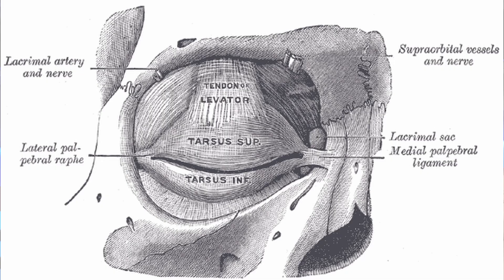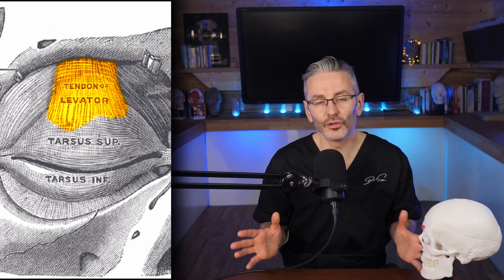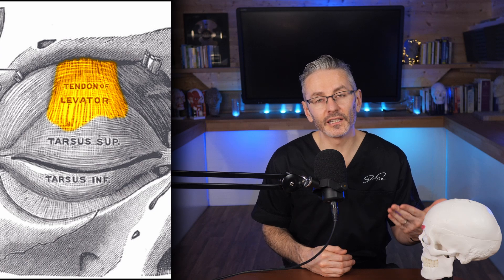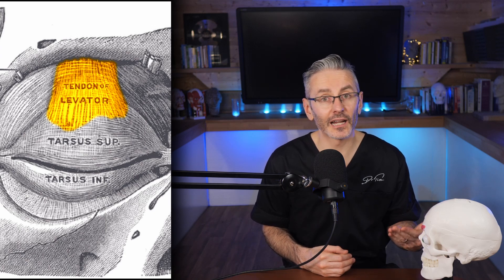First, let's understand what causes a ptosis. There are two muscles that control your upper eyelid: you have your tarsal muscle, which is a smooth muscle, and then the levator palpebrae muscle, which is a normal striated muscle underneath voluntary control. The primary muscle which is affected in a ptosis is the levator palpebrae muscle. Now, if you Google this muscle and you learn about it in two dimensions, it feels like it is running in the actual eyelid.